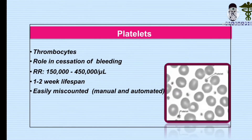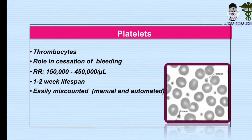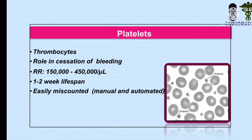Now, what are platelets? Platelets are the thrombocytes, and this is the topic of today's lecture — their role in the cessation of bleeding. The reference range is 150,000 to 450,000 per microliter, and their lifespan is 1 to 2 weeks. They are easily miscounted both manually and automatically, which is why we count them carefully.